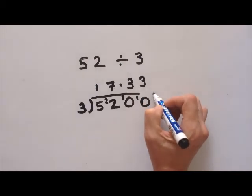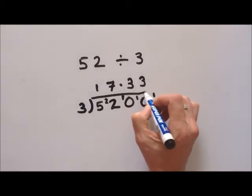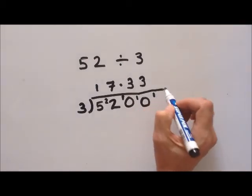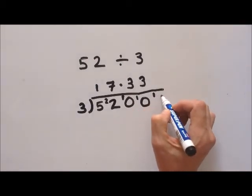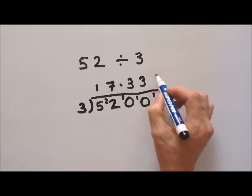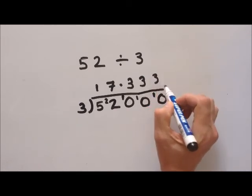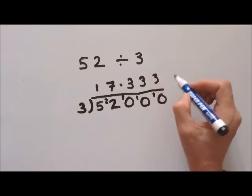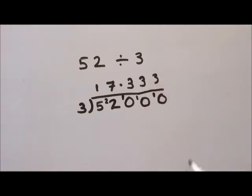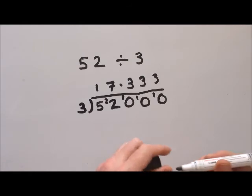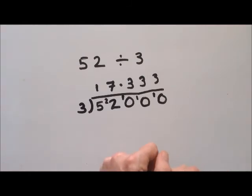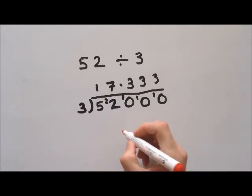How many threes can we get out of ten again? Three threes are nine, and a remainder of one — and as you can see, this would go on forever. We'd keep getting remainder one.